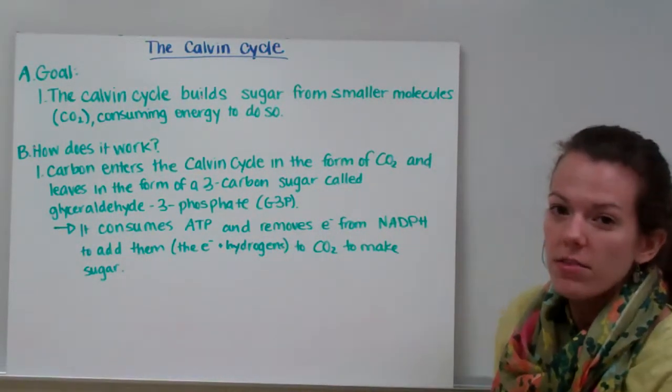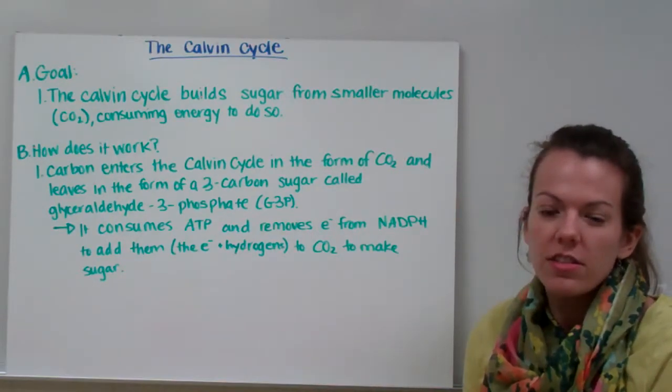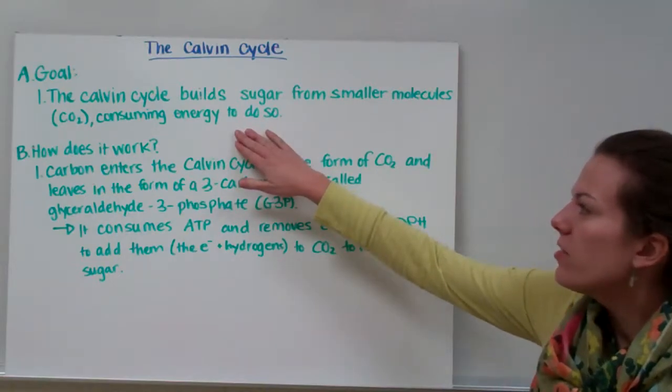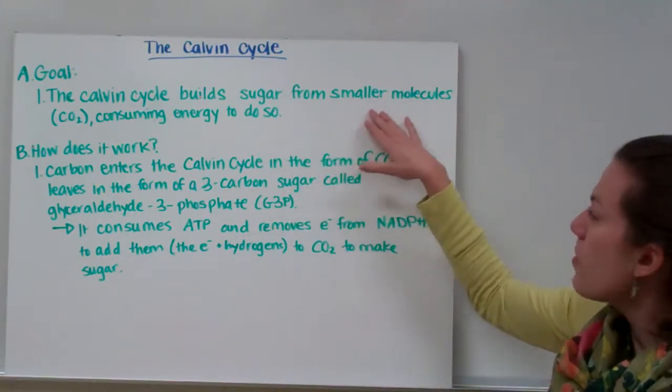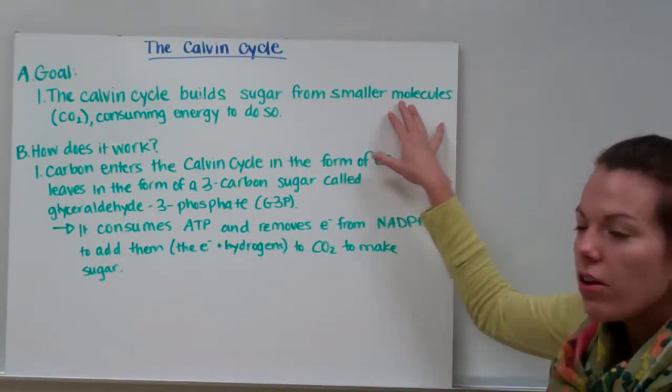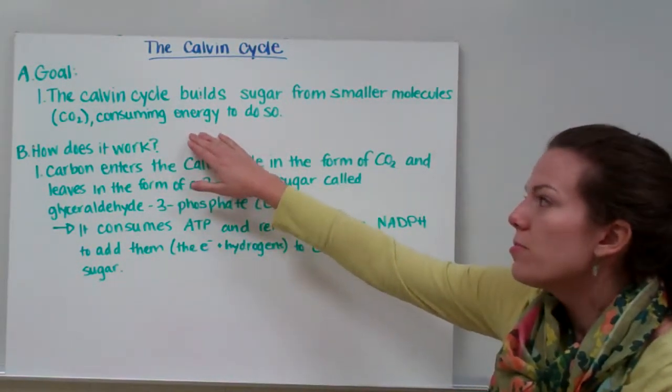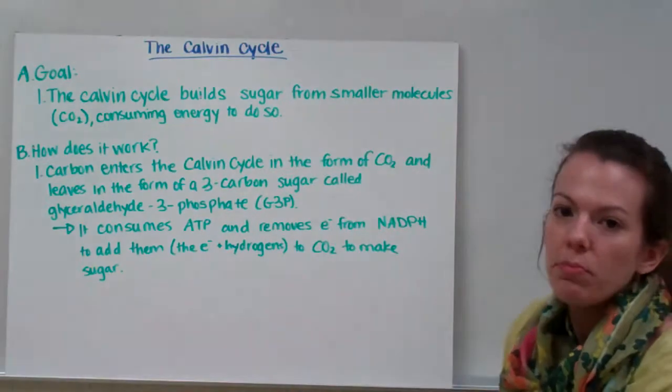All right, now that we've discussed what happens during the light reactions, the next step is the Calvin Cycle. The goal of the Calvin Cycle is to build sugar from smaller molecules—we're taking carbon dioxide, putting them together to build sugar, and this consumes energy to do so, so it requires an input of ATP.